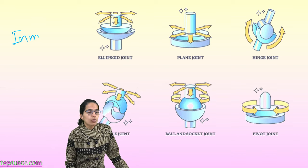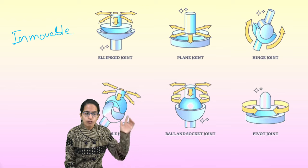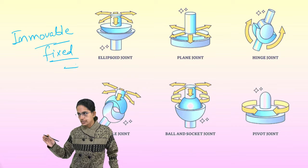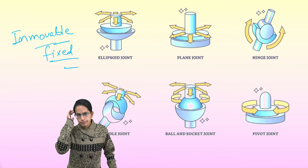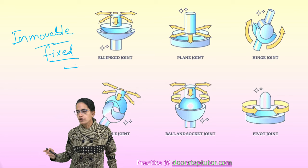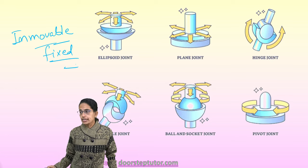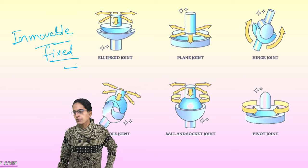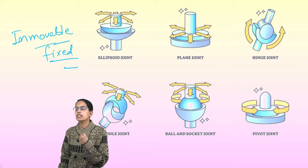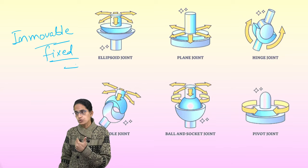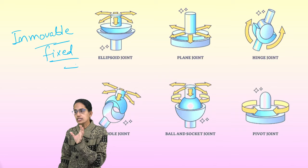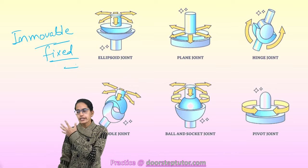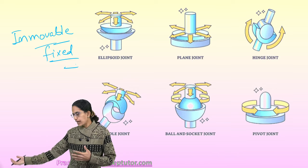There are three important types of joints. Immovable joints — also called fixed joints — are the best example of which are the skull joints, connected by sutures. The eight bones in the skull are immovable or fixed joints. Slightly movable joints, also called partially movable joints, are found between the ribs and the breastbone — the sternum is a good example.